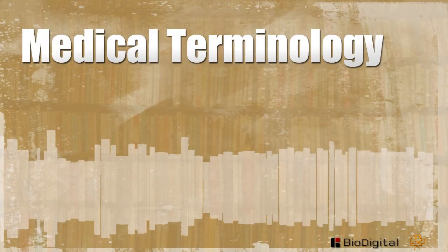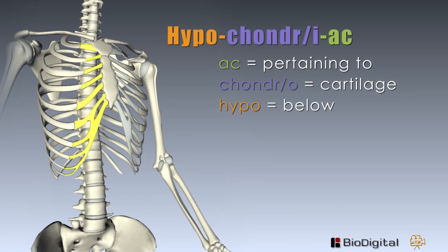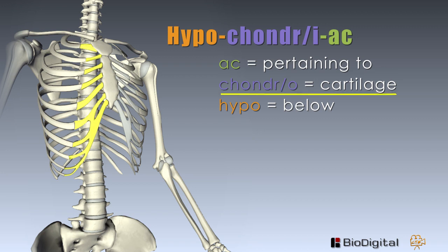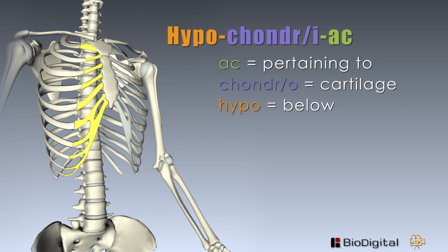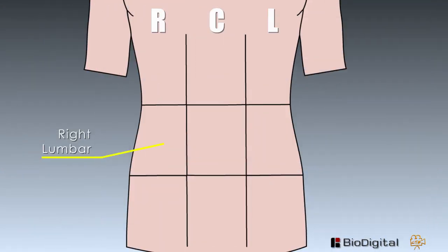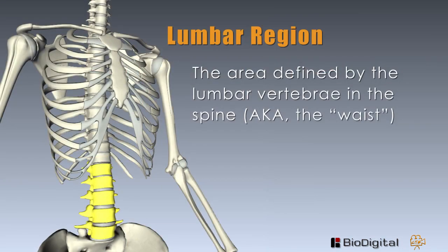Let's discuss some of the medical terminology as we go through this lesson. The term hypochondriac is divided as follows: the suffix -ac means pertaining to, the word root chondro is cartilage, and the prefix hypo means below. So the right hypochondriac is located below the area pertaining to the cartilage of the ribs. Below that we have the right lumbar region — lumbar is the area defined by the lumbar vertebrae in the spine, also known as the waist.